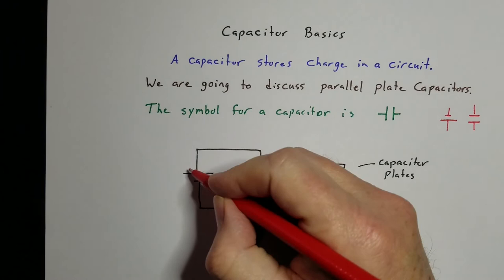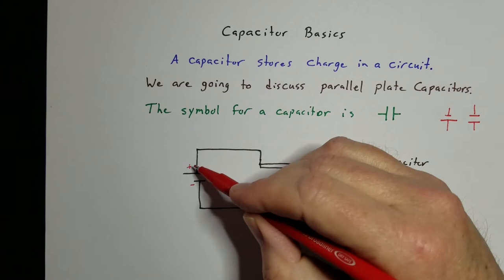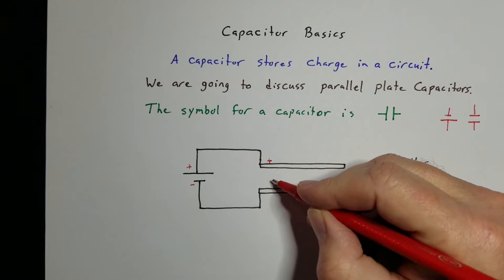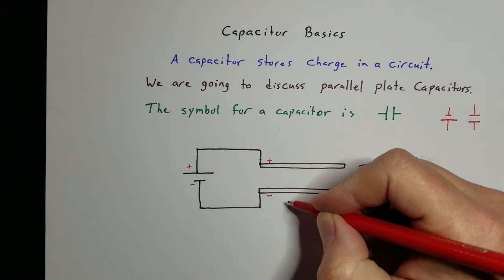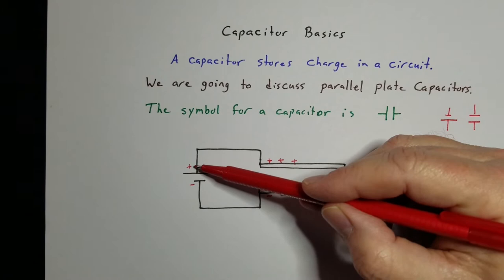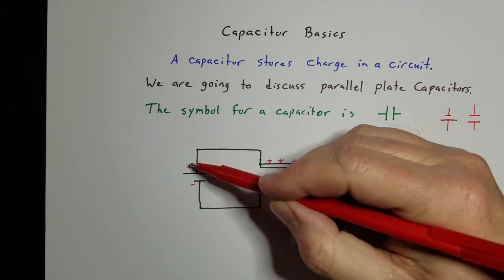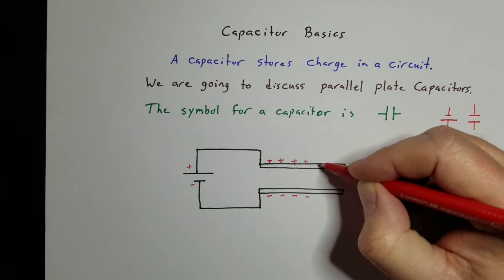There are a couple of ways you can look at this. One: when you turn on the circuit, conventional current flows as positive charge, so positive charges run out and build up on one plate, which forces — by conservation of charge — a positive charge on the corresponding side to move away, leaving a negative charge. So as positive charges build up on one side, negative charges build up on the other plate. Another way to look at it: the battery has an overabundance of positive charges on one side and negative charges on the other, and either way we build up equal charge on both plates.